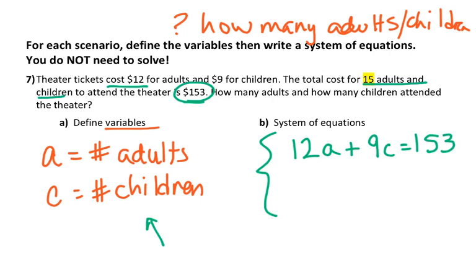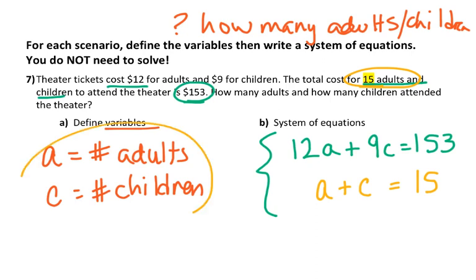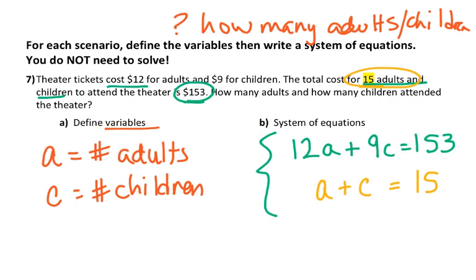The next equation is about how many adults and children, not money. I have a number of adults and a number of children, but I don't know how many. So: how many adults plus how many children equals 15 people altogether. There's your system. Today we're not going to solve that — we're just setting it up. You're going to define your variables and figure out how to write the system, using the pieces of information correctly.